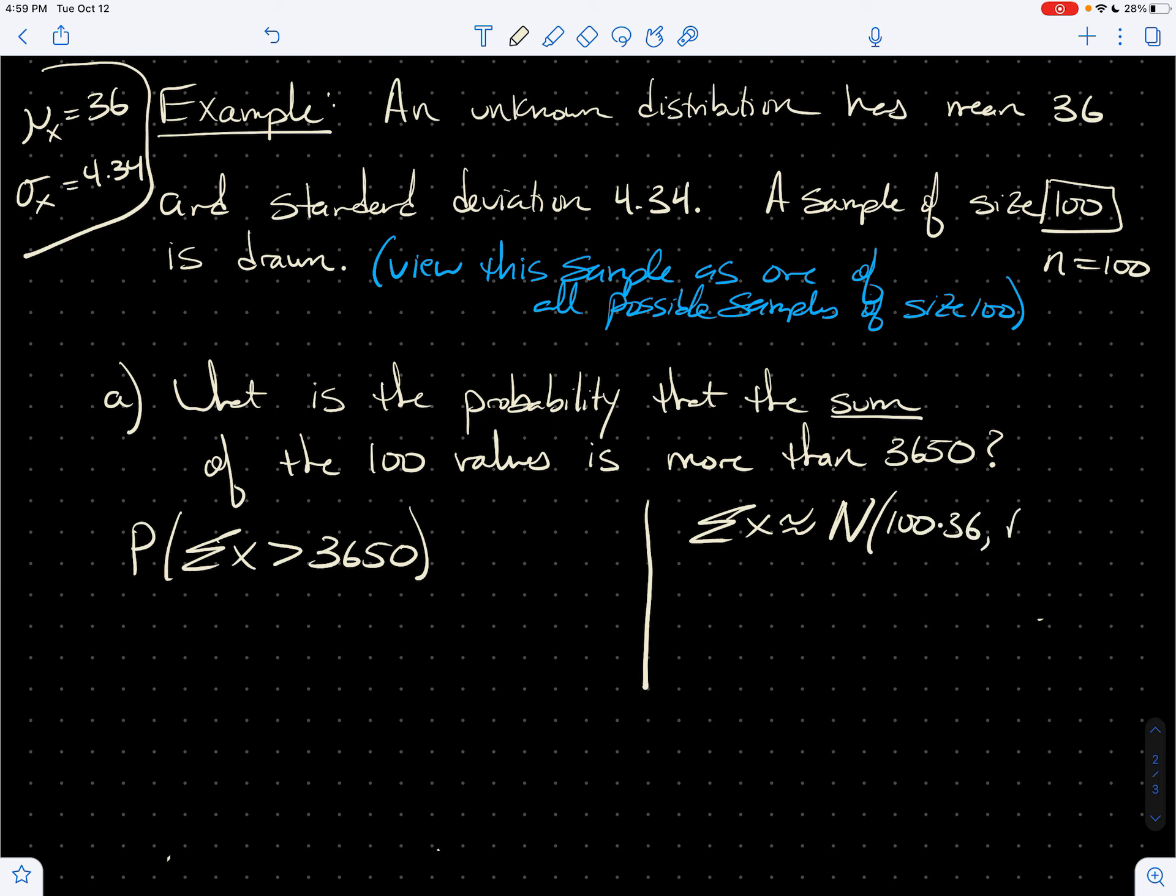And then square root of the sample size, so square root of 100. I'm just going to switch that to 10. I think we can do that. 10 times the original standard deviation of 4.34. And so this is just normal with mean 3600 and standard deviation 43.4.